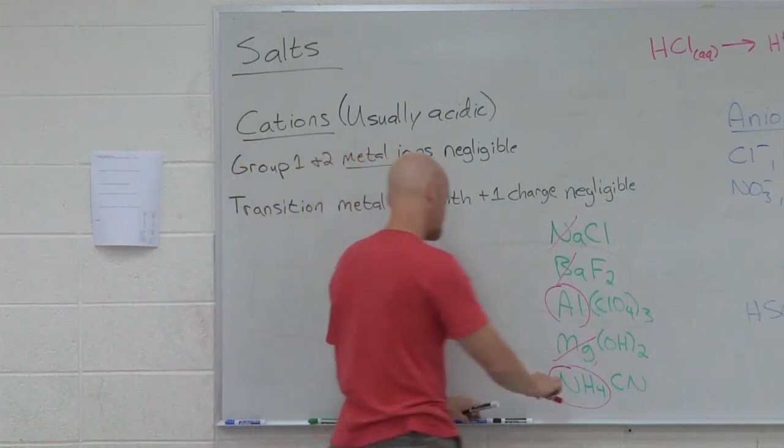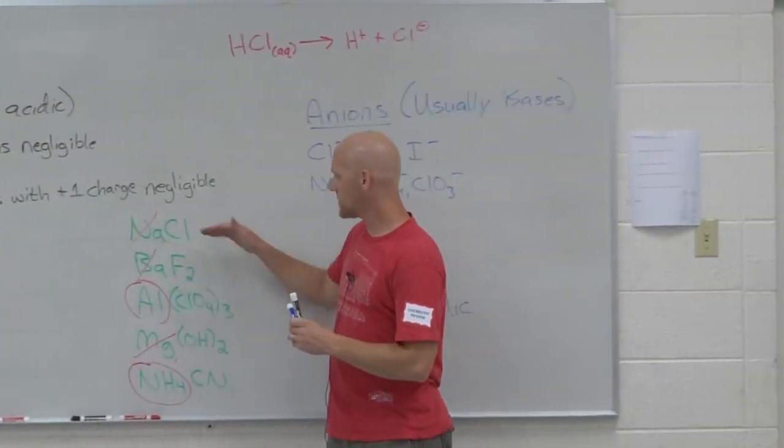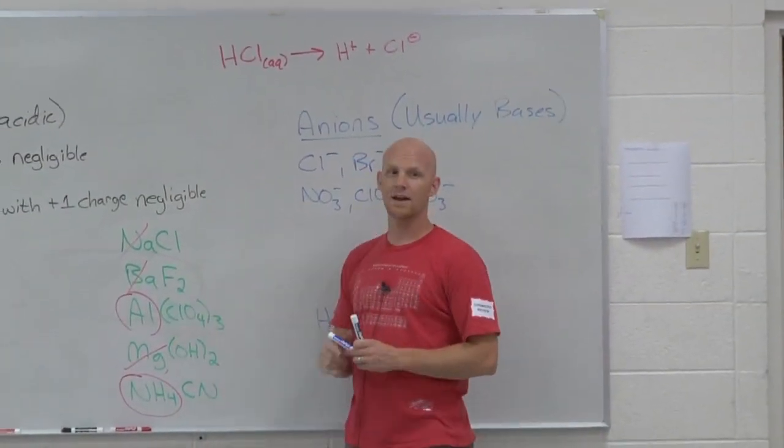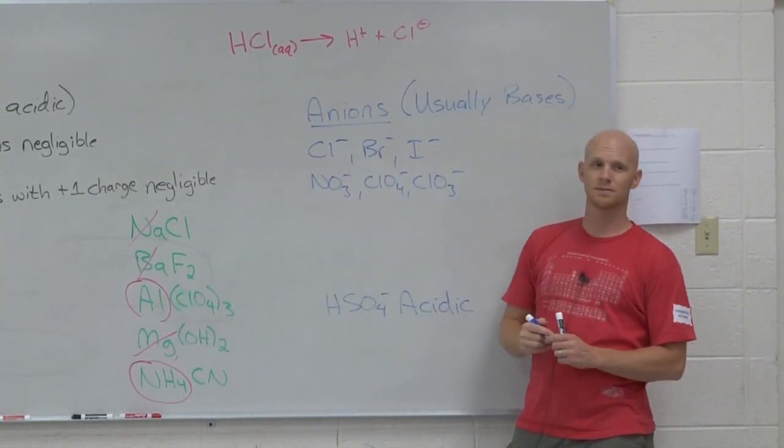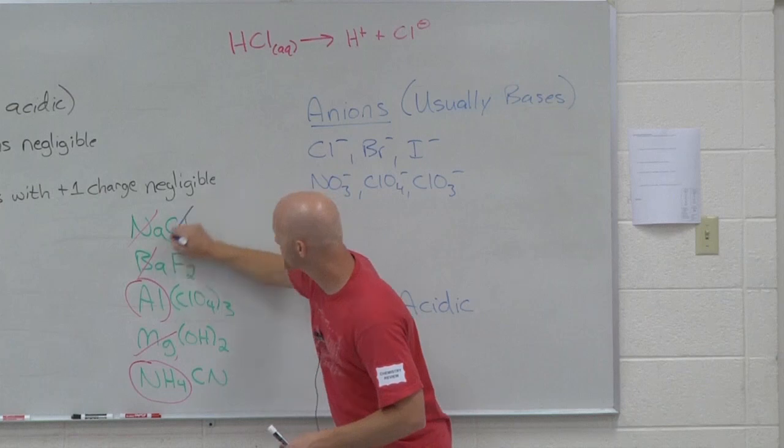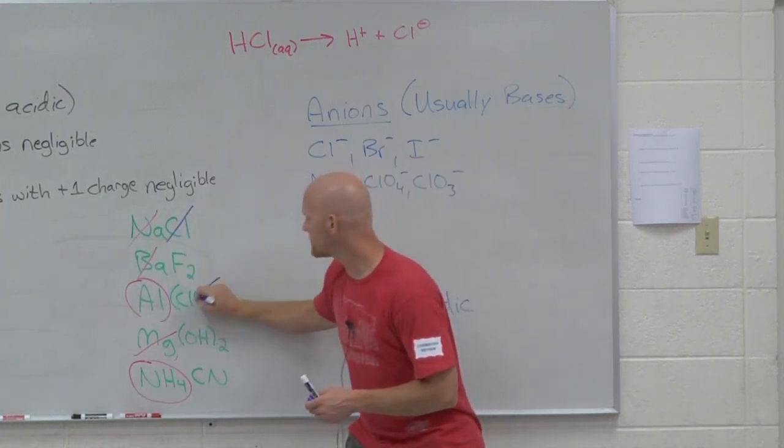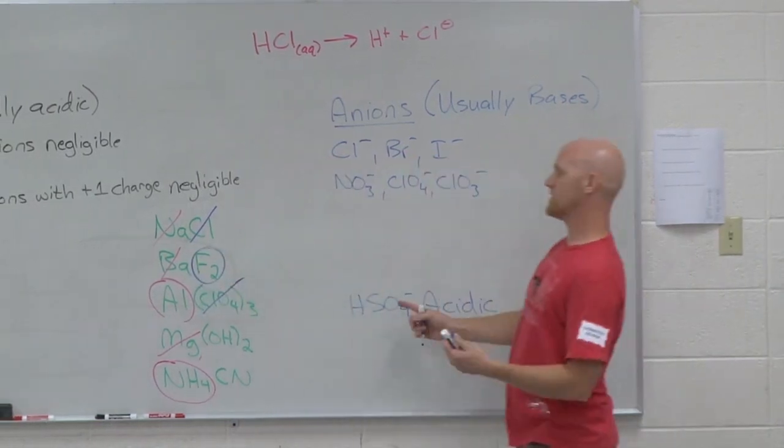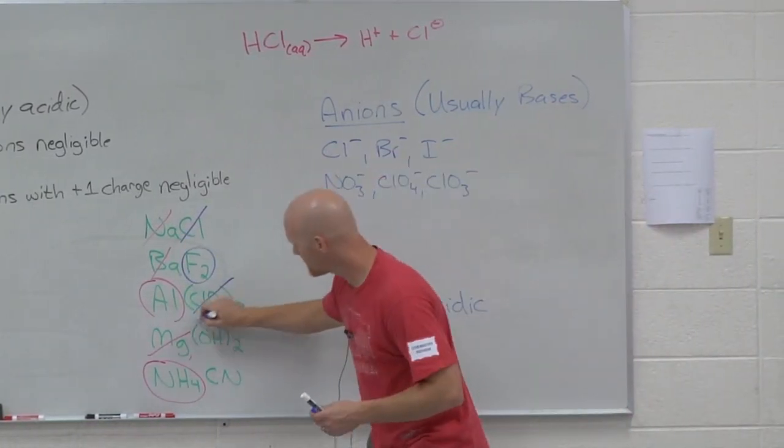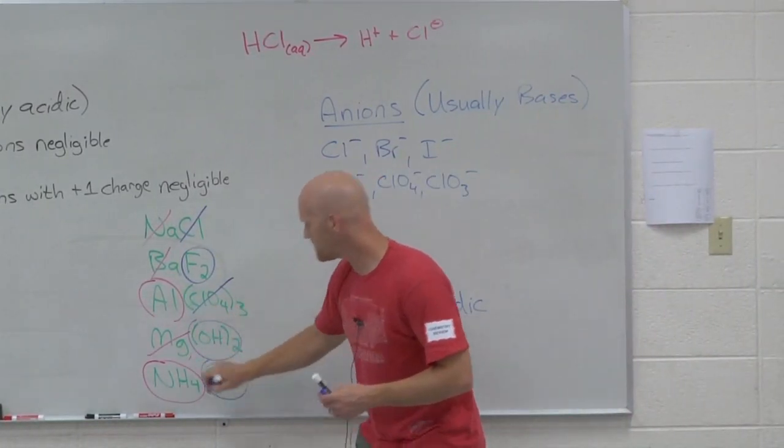Now let's go to the other side. Now I look at the anions and figure out which anions are negligible. Which anions are negligible here? Cl is negligible. ClO4 is negligible. And any left, as long as it's not this one, are bases.